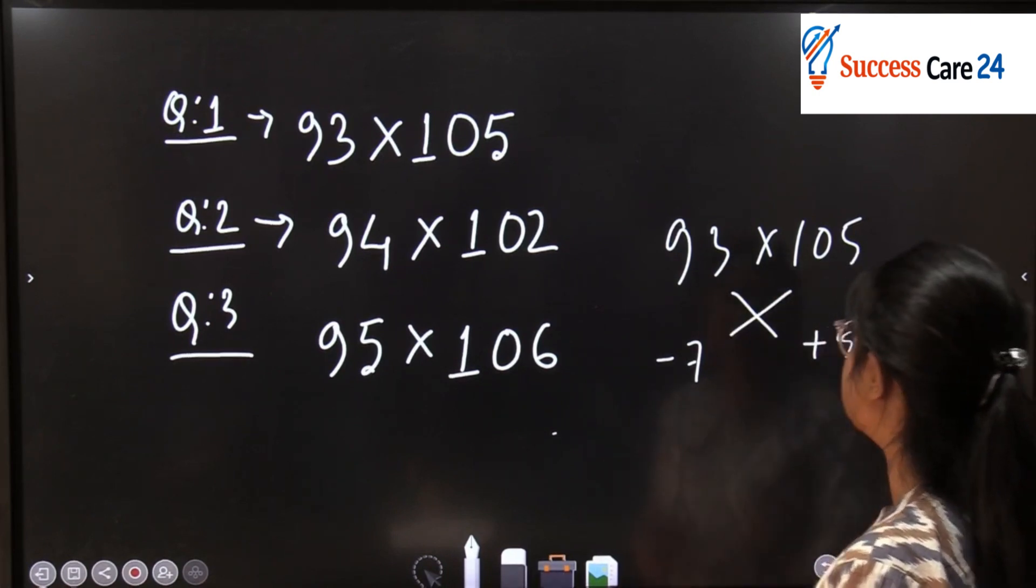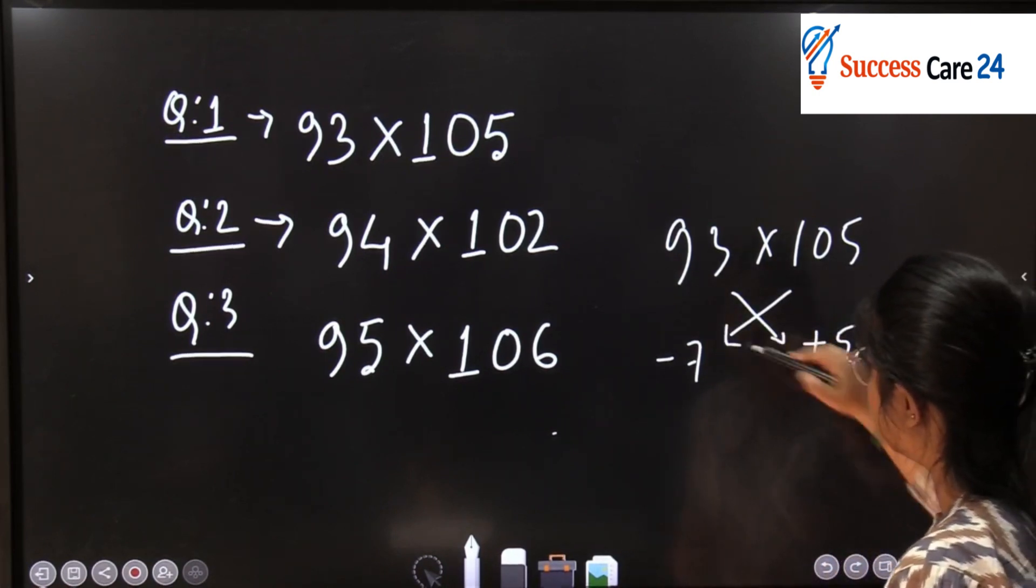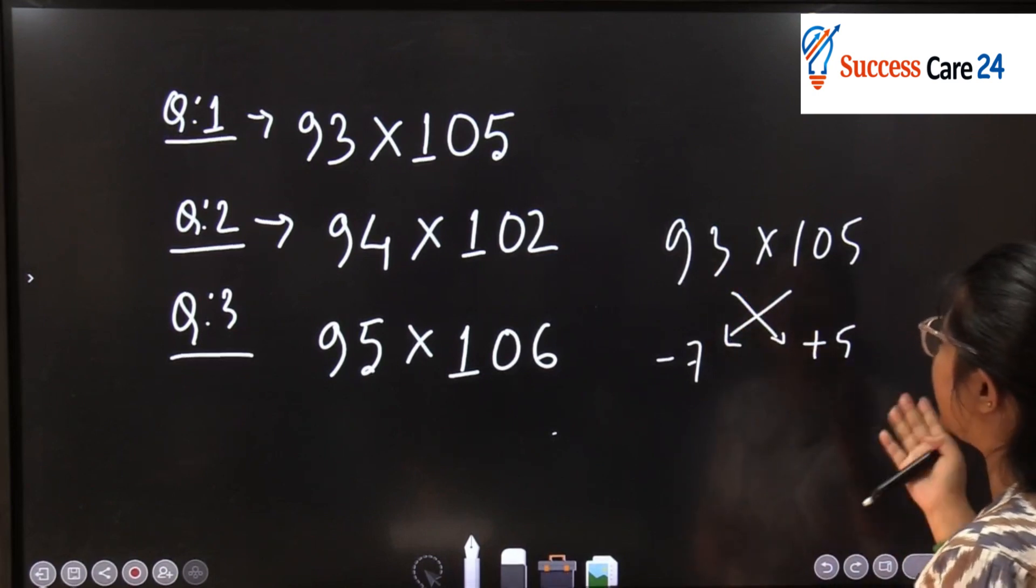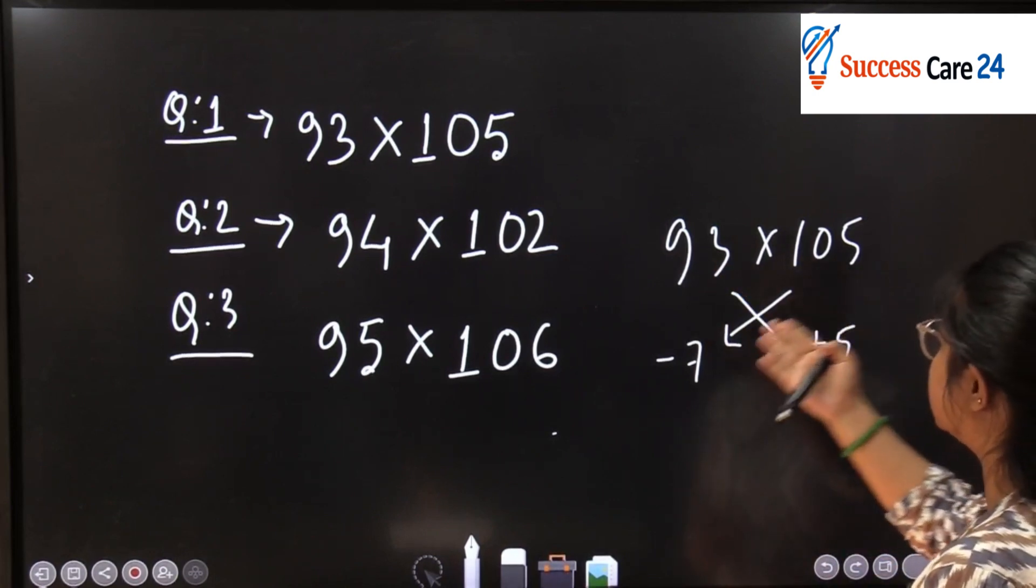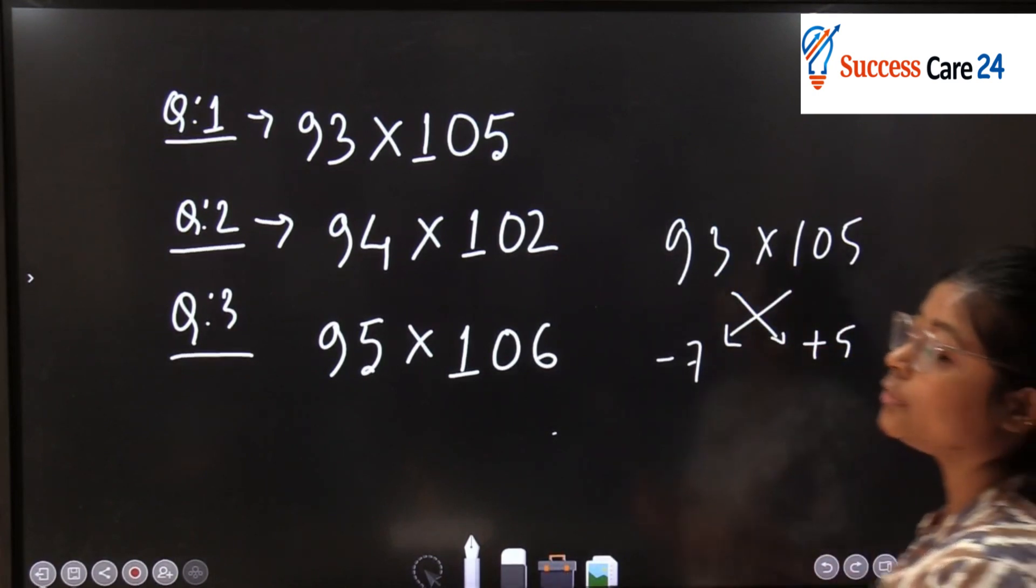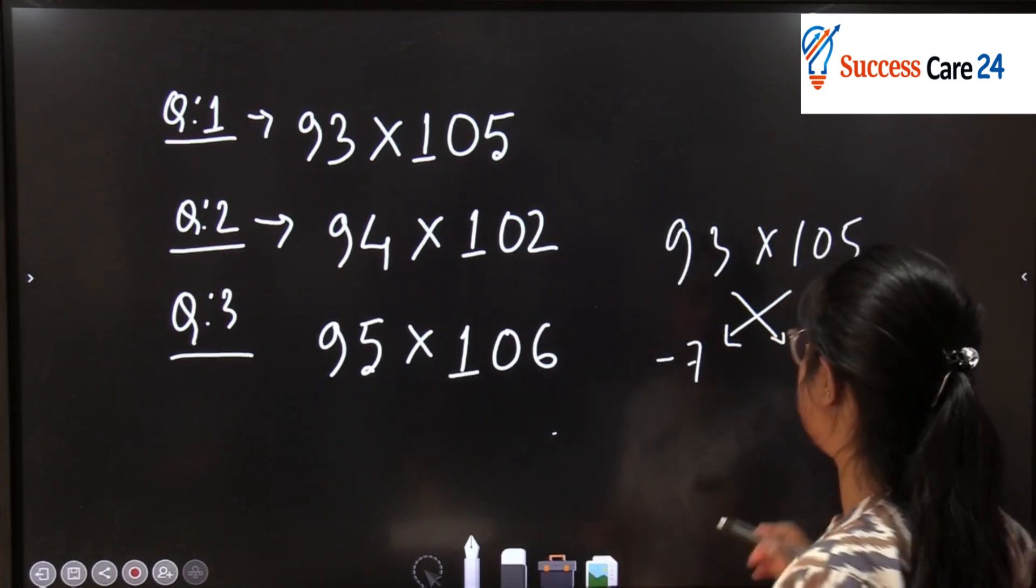So what will we do? We will do 93 plus 5, or 105 minus 7. Which will give you the exact same value.